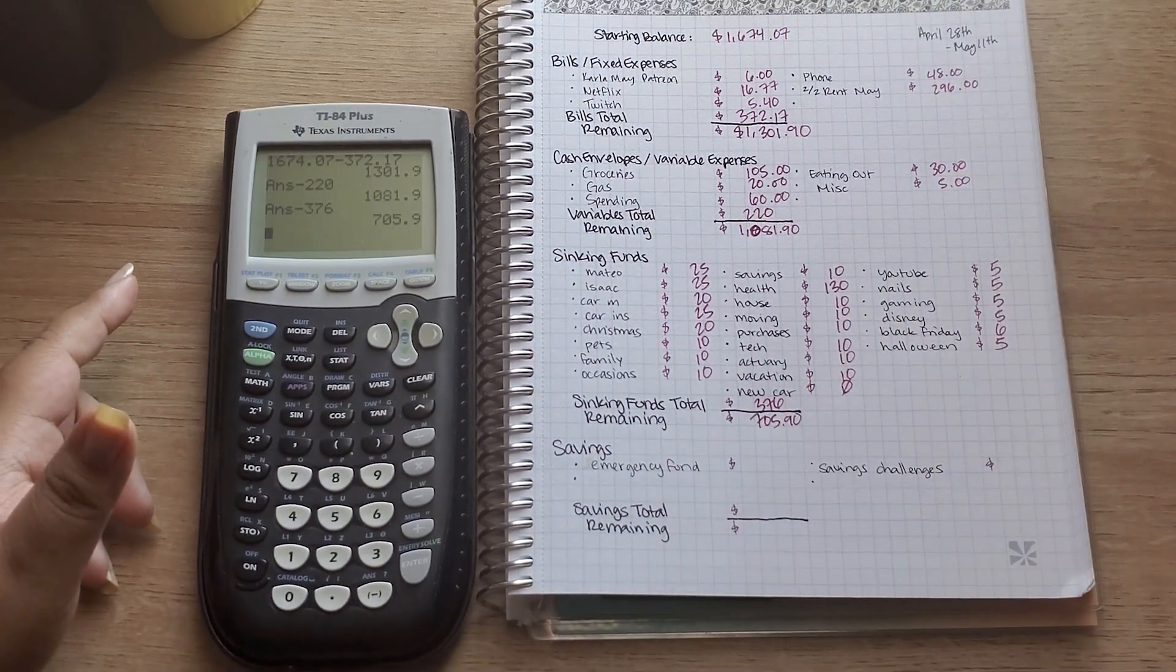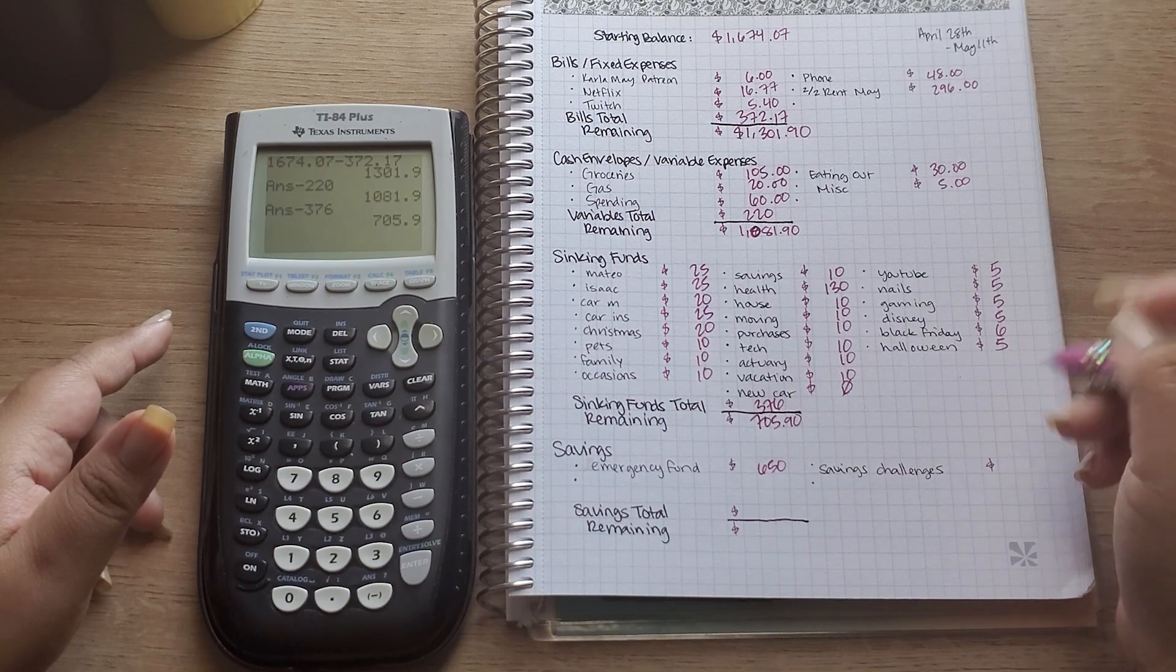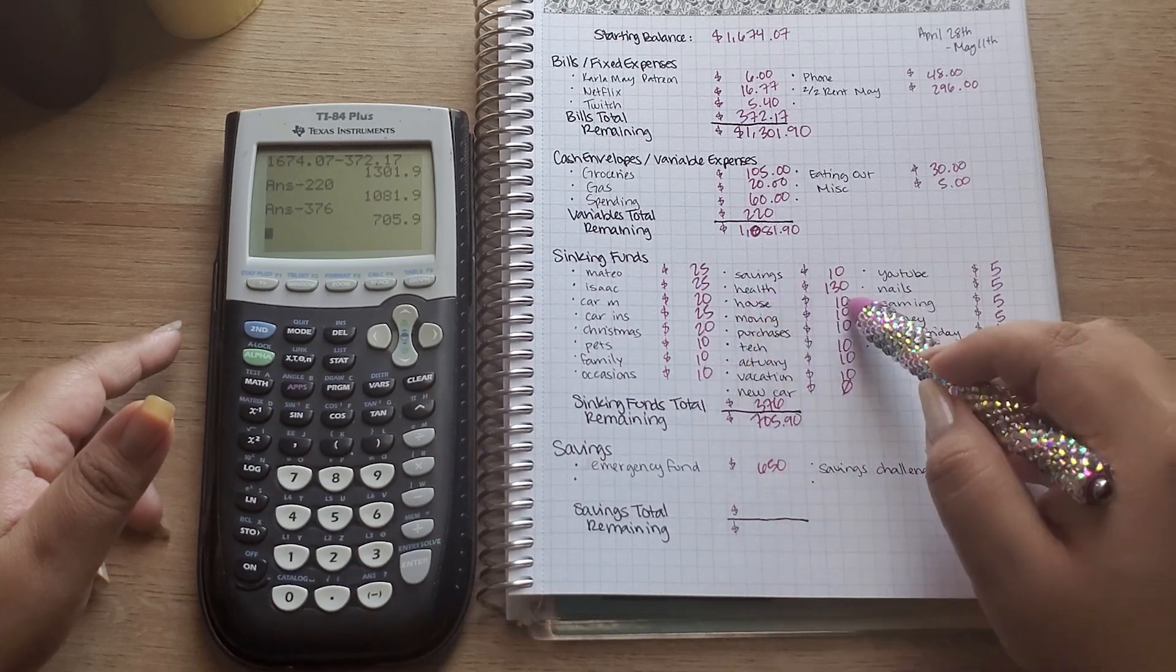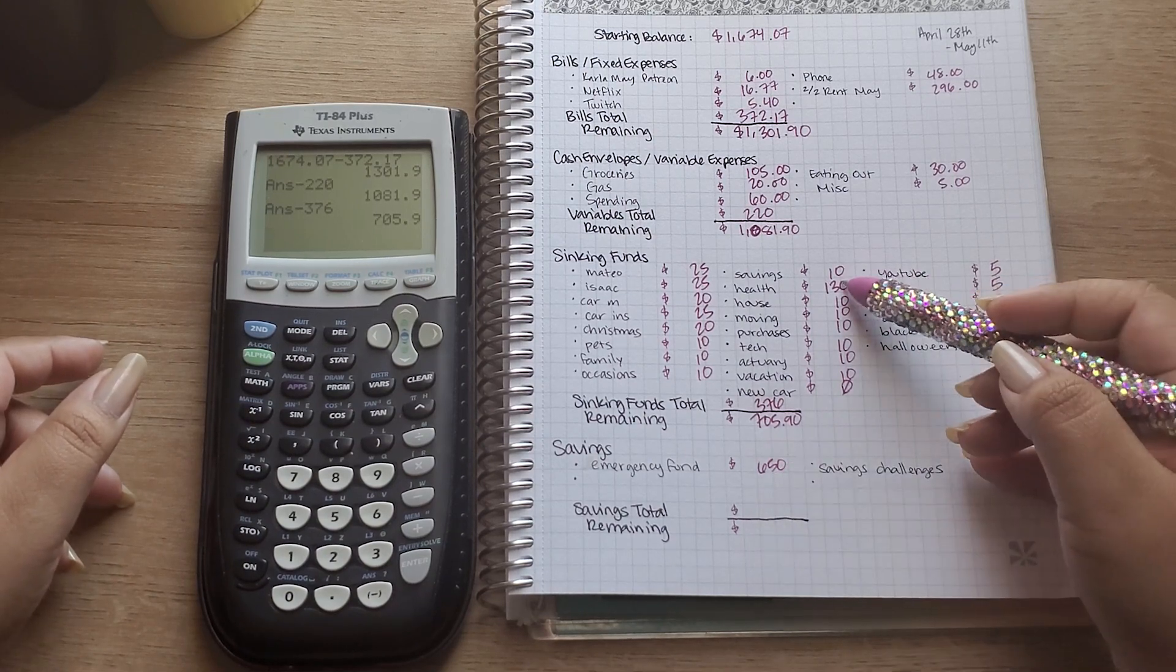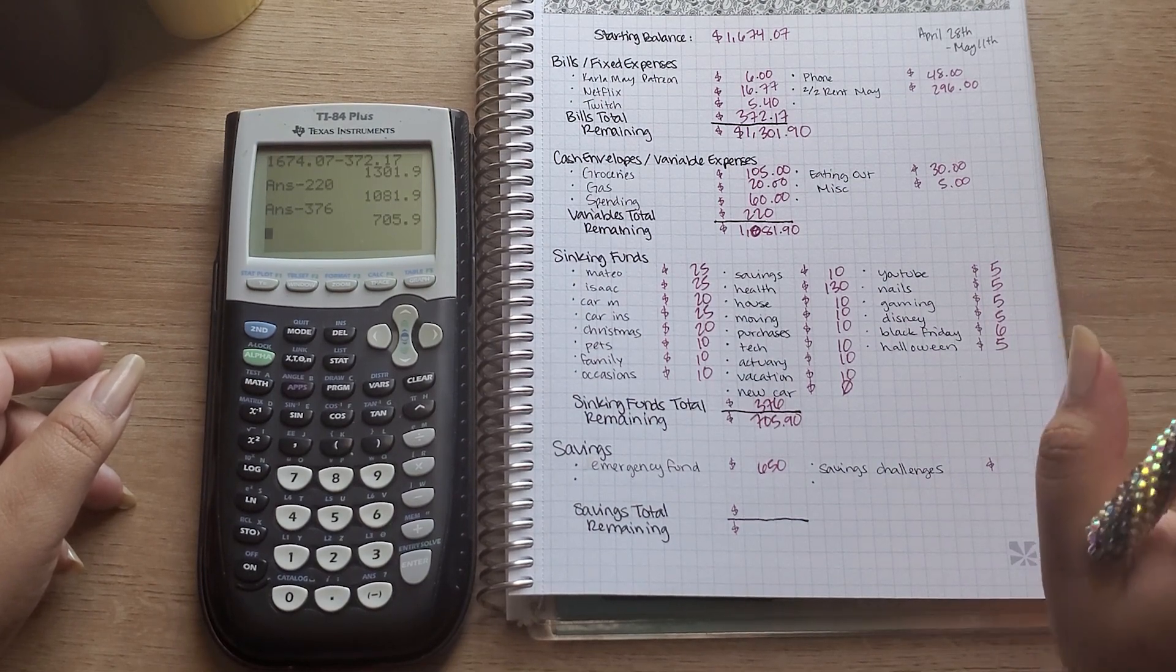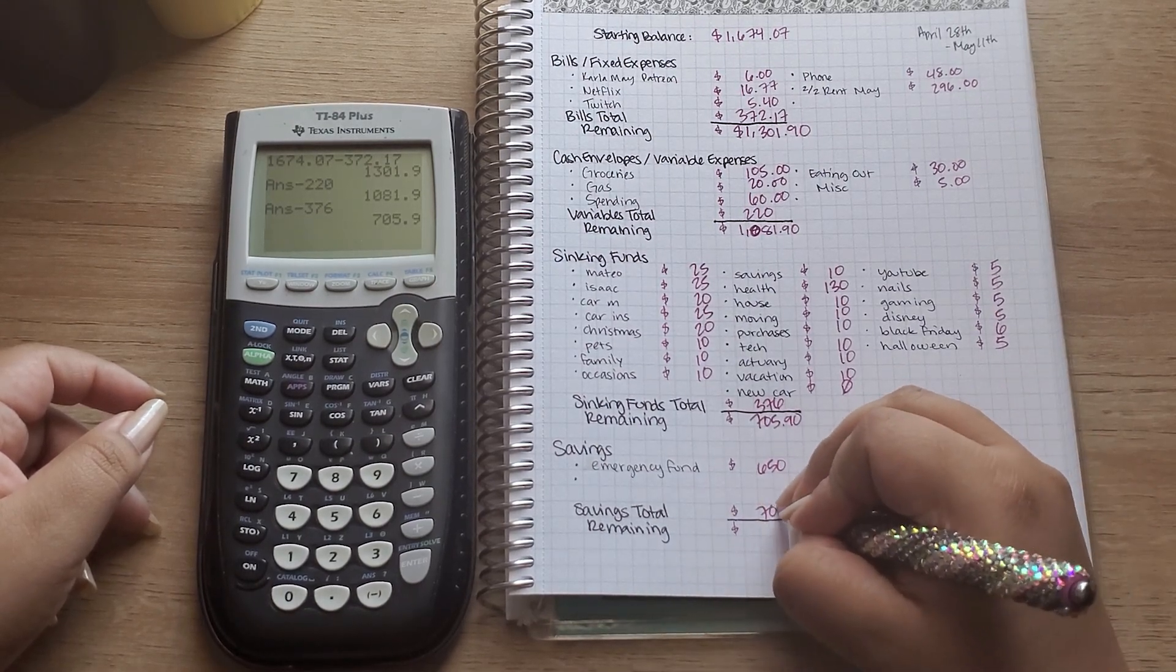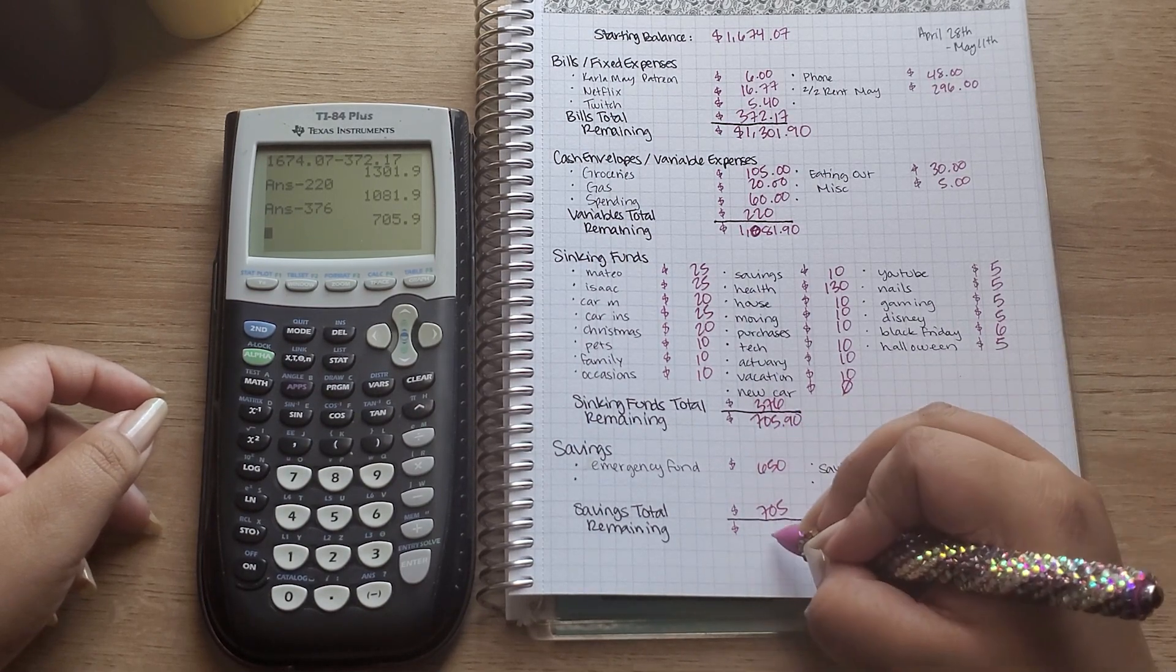And now on to my savings that includes my emergency fund and my savings challenges. So this paycheck I will be budgeting $650 to go to my emergency fund. It was going to be like $750 or even $800 going to my emergency fund but I took a little bit out to put towards my health envelope. That's kind of where that money came from, I just kind of redistributed that amount. But that's okay, I'm still making great progress to my emergency fund so I'm not too worried about that. And then my savings challenge, I'm going to budget $55. So this total brings me to $705. So remaining after I take out from the amount that I had before was 90 cents.